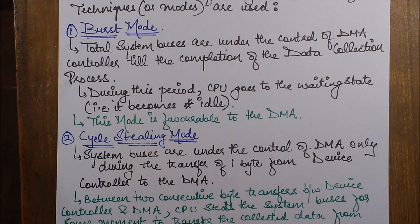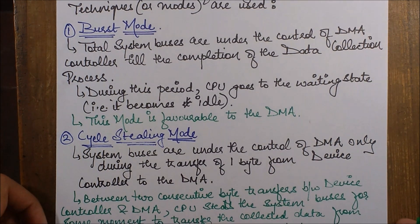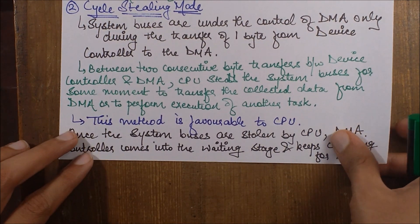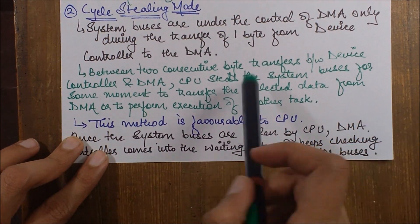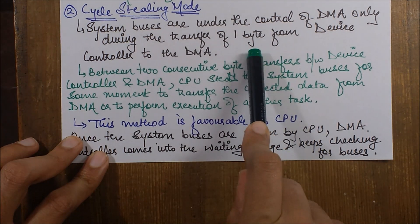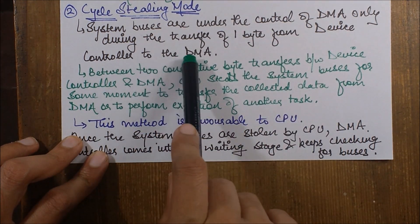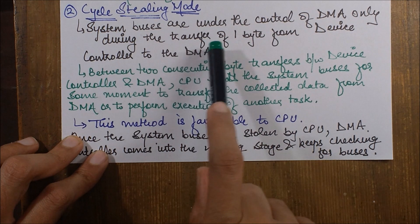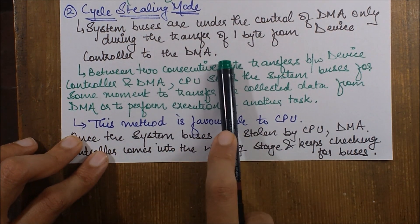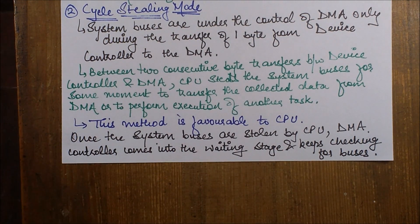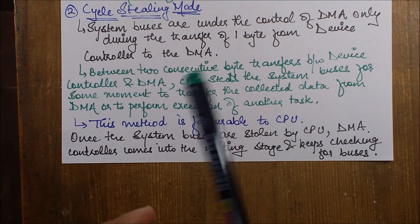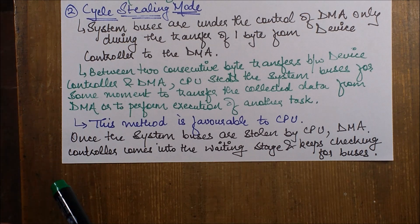Next comes cycle stealing mode. In cycle stealing mode, the system buses are under the control of DMA only during the transfer of one byte from the device controller to the DMA. As discussed, first the CPU goes to the DMA to request a particular device.